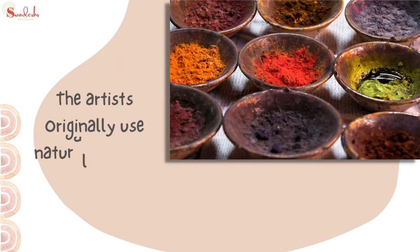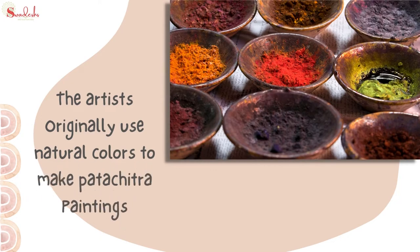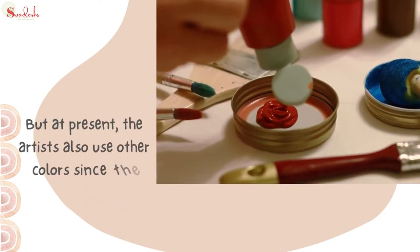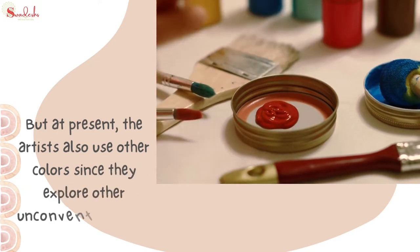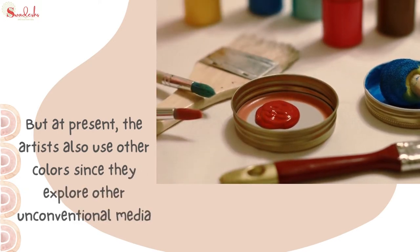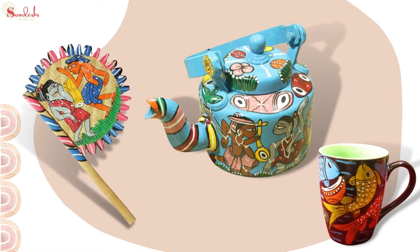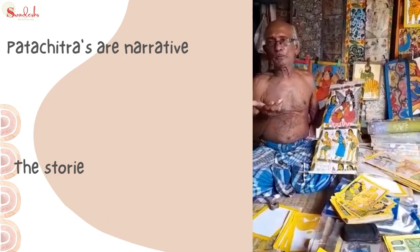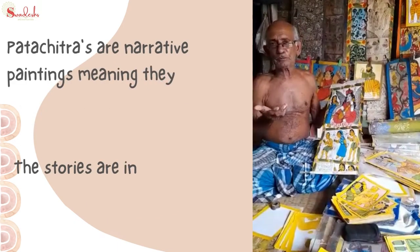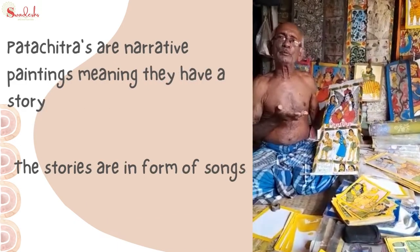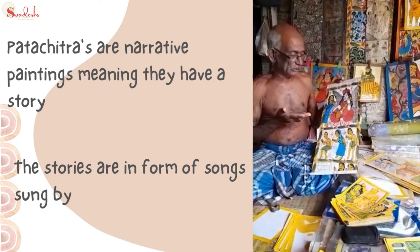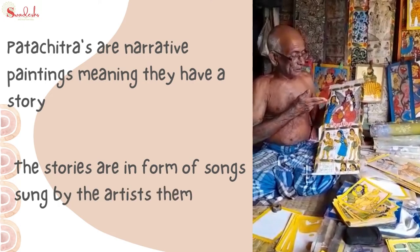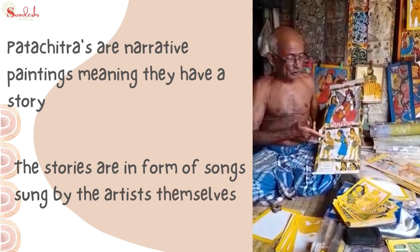The artists originally used natural colors to make Pato Chitra paintings, but at present they also use other colors as they explore unconventional media. These are narrative paintings — they have a story, and the stories are in the form of songs sung by the artists themselves.